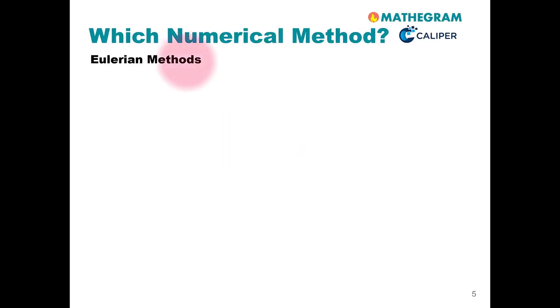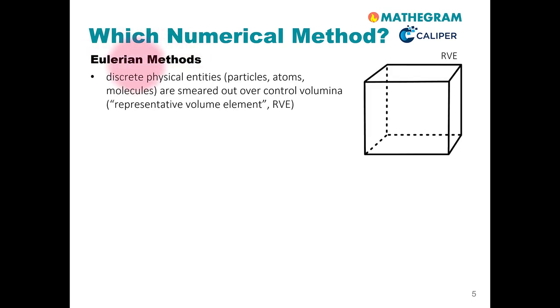The first big group of methods are the so-called Eulerian methods. Here, discrete physical entities, for example particles, atoms, molecules, are smeared over control volumina. These control volumina are often called representative volume elements, or in short RVEs. For each of these RVEs, balance equations for properties can be formulated, for example, for the fluid velocity U or the pressure in the RVE.